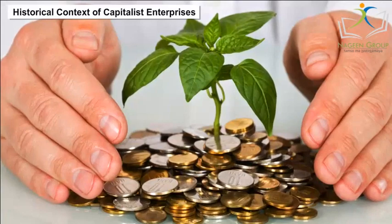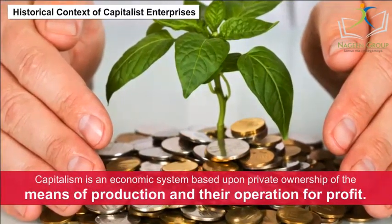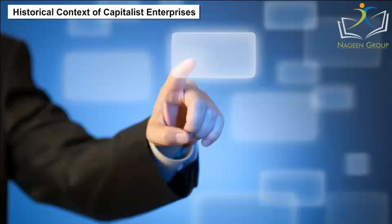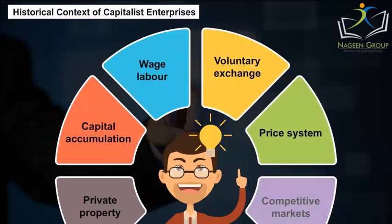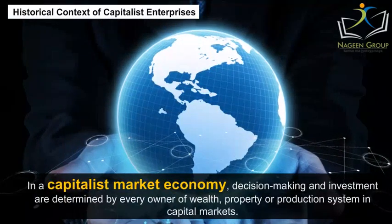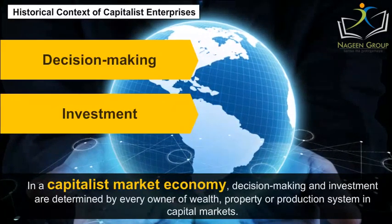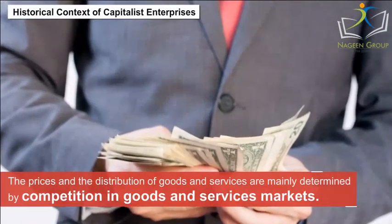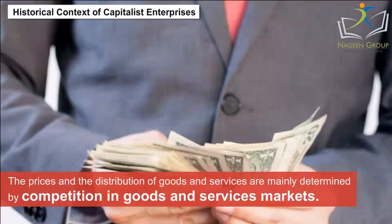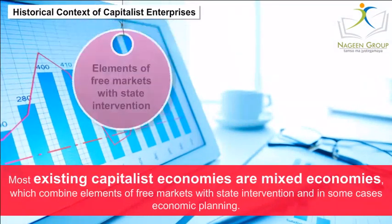Historical Context of Capitalist Enterprises. Capitalism is an economic system based upon private ownership of the means of production and their operation for profit. Characteristics central to capitalism include private property, capital accumulation, wage labour, voluntary exchange, a price system and competitive markets. In a capitalist market economy, decision making and investment are determined by every owner of wealth, property or production system in capital markets, whereas prices and distribution of goods and services are mainly determined by competition in goods and services markets.